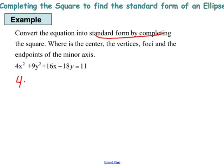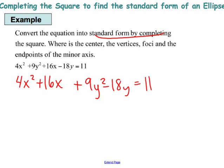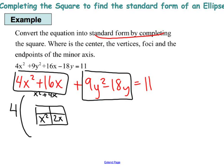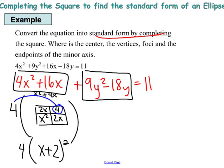Just like with the circle, we start by rearranging the x terms together, the y terms together, and putting the constants on the other side. The 11 was already on the other side. Now I'm going to complete the square on the x's by factoring out the 4, so I'm working with x squared plus 4x. In the perfect square I'd have x squared, 2x in each corner, and 4 in the corner, giving 4 times x plus 2 squared. But remember the 4 inside gets scaled up by the factor of 4 outside, so we actually created 16, and we need to add 16 to the other side.